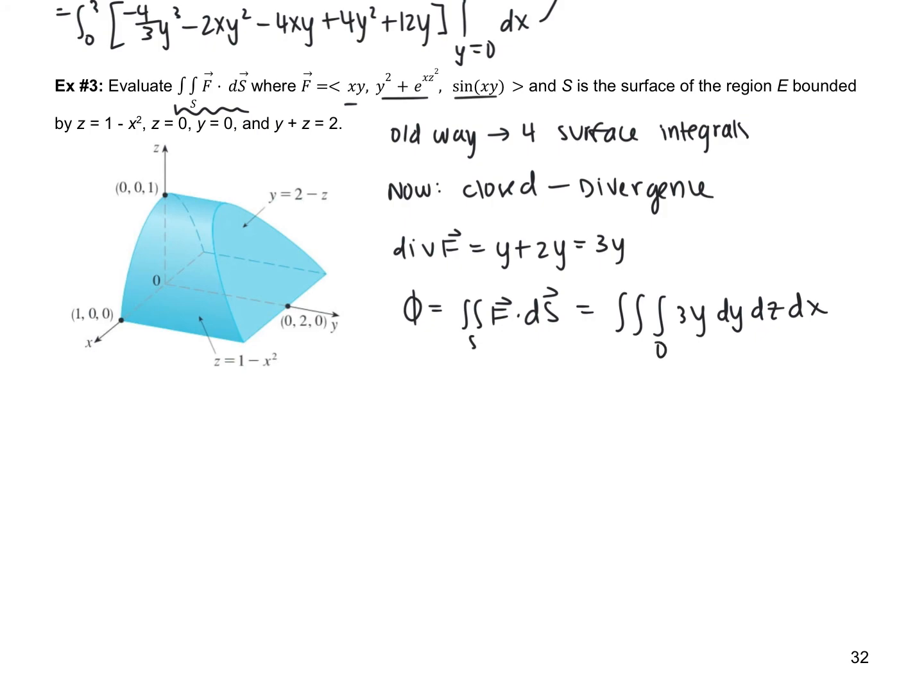y is going to go from 0 to this plane right here, which is 2 subtract z. z then, is going to go from 0 to this kind of parabola right here, which is 1 subtract x squared, and x will go from negative 1 to 1. Now, it is much easier to come up with these bounds when you have a figure. As I've talked about before, you're not always going to have a figure, so if you don't have one, it would be a good idea to draw one.